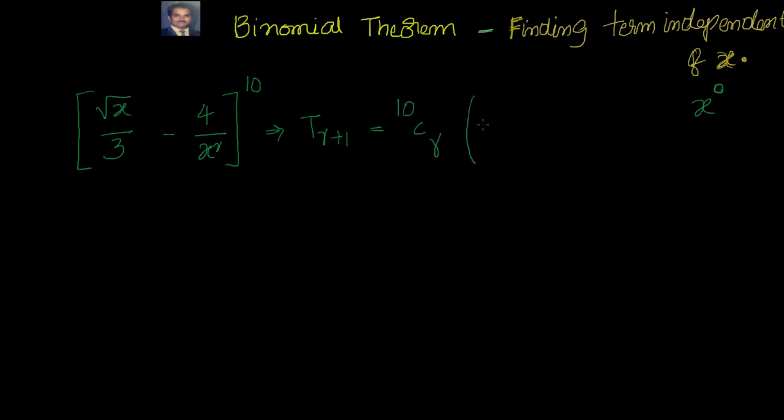x to the power of N minus R, x is x to the power of half by 3 whole to the power of 10 minus R into minus 4 by x square whole to the power of R. Now I am not worried about all the coefficients there. I am more worried about what is the power of x. So I will simplify that minus 10CR minus 1 whole to the power of R because we don't know what is the value of R.